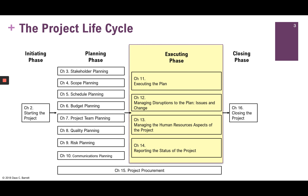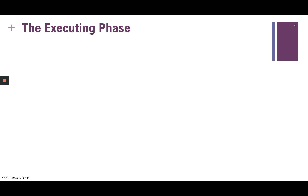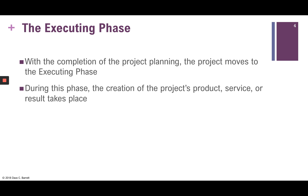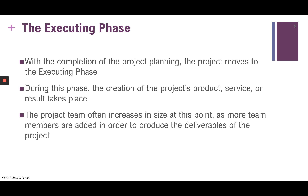Looking at our project life cycle, we are now moving out of the planning phase and into the executing phase. This is the first chapter that begins to talk about the executing phase. With the completion of planning, the project moves to executing — this is where the creation of the project's product, service, or result takes place.